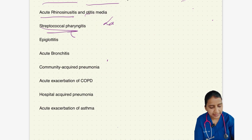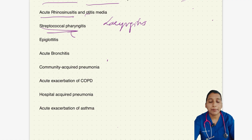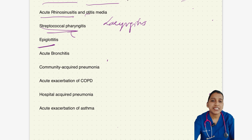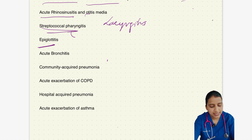Next, talking about laryngitis: antibiotic may not be routinely prescribed because most cases are viral. Next, coming to epiglottitis: IV third generation cephalosporins and an agent active against MRSA — that is vancomycin — may be needed in severe cases.